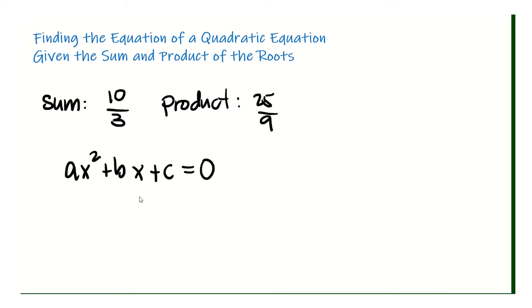Now when we're looking for the equation of a quadratic equation, the standard equation should be that a, b, and c are whole numbers. There can be different forms of this equation — it can have a fraction — but its simplest form is the one with a, b, and c as whole numbers.